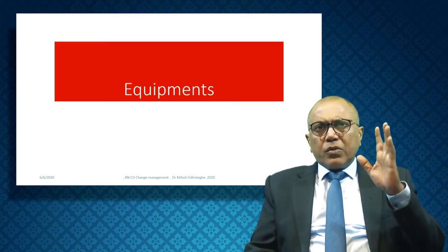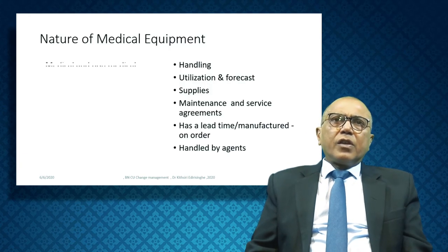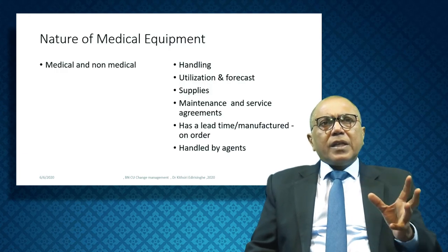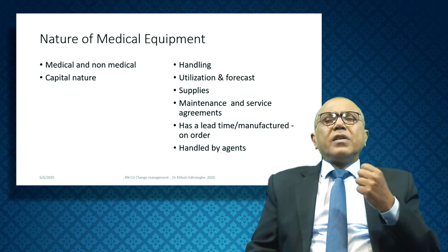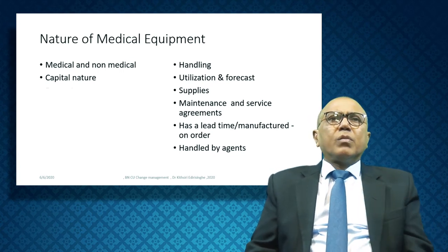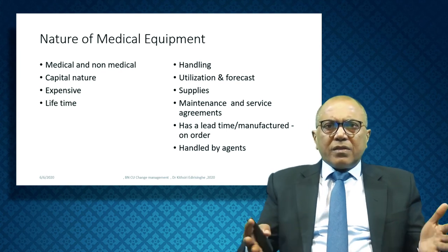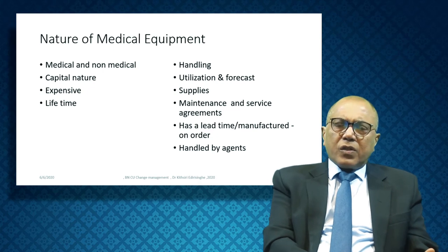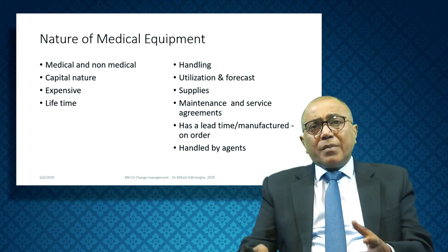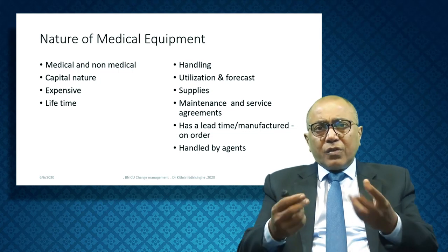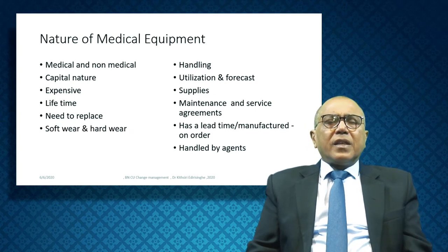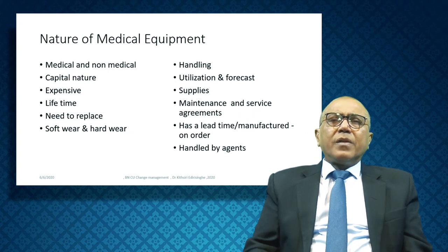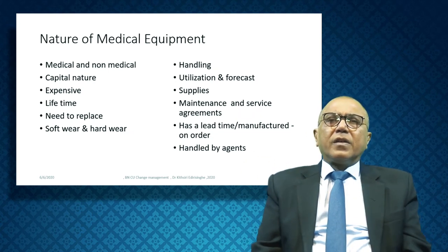Looking at equipment: equipment is very expensive. There are medical and non-medical equipment, such as furniture and ultrasound scanners. They are very capital intensive — you have to spend a lot of money to buy them. Lifetime varies: maybe three to five years for an ECG machine, sometimes seconds for a pulse oximeter if you drop it. There is software and hardware. Handling and training are very important, as well as utilization — how much you utilize these machines — and forecasting.